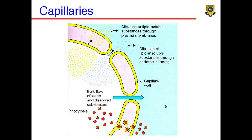Just to remind you what this looks like: lipid solubles go right through the plasma membrane, lipid insolubles have to go through pores. Osmosis also goes through pores, and for endo/exocytosis you have to put substances in vesicles to get them to the other side.